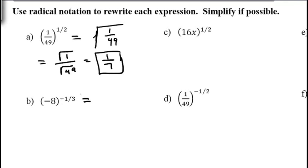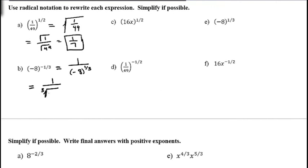Next, negative 8 raised to the negative 1/3. First, handle the negative exponent by writing it as 1 over negative 8 to the positive 1/3. The denominator becomes a cube root, giving us 1 over the cube root of negative 8. The cube root of negative 8 is negative 2, so the result is 1 over negative 2, which can also be written as negative 1/2.